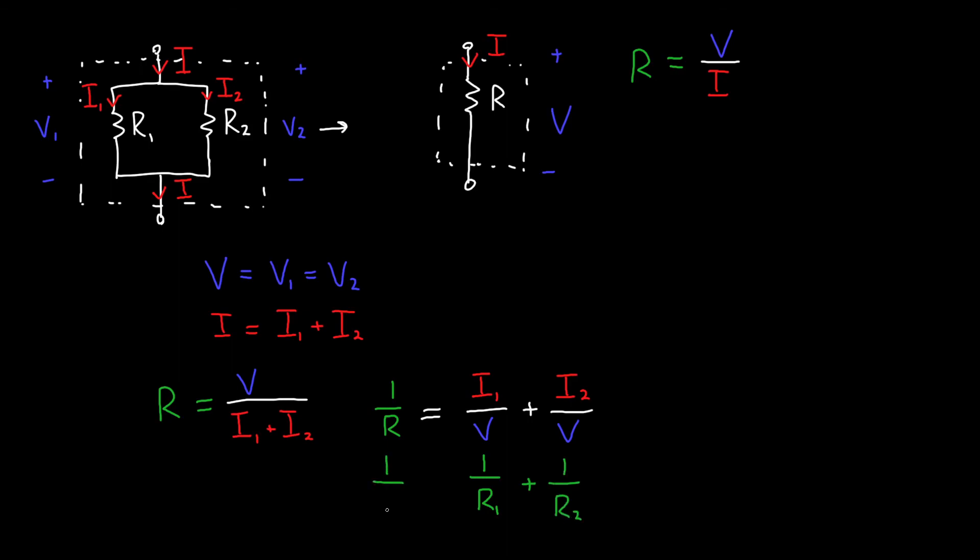And so for adding resistors in parallel, I have a new rule. It's not that they add just like the sum of the resistance, but it's the inverse of the resistances that add together, or their conductances that add. So 1 over R, which is my equivalent single resistor, is 1 over R1 plus 1 over R2.